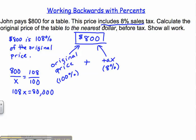And then to solve for x, I divide both sides by 108. And what I get is a repeating decimal: 740.740 repeating.